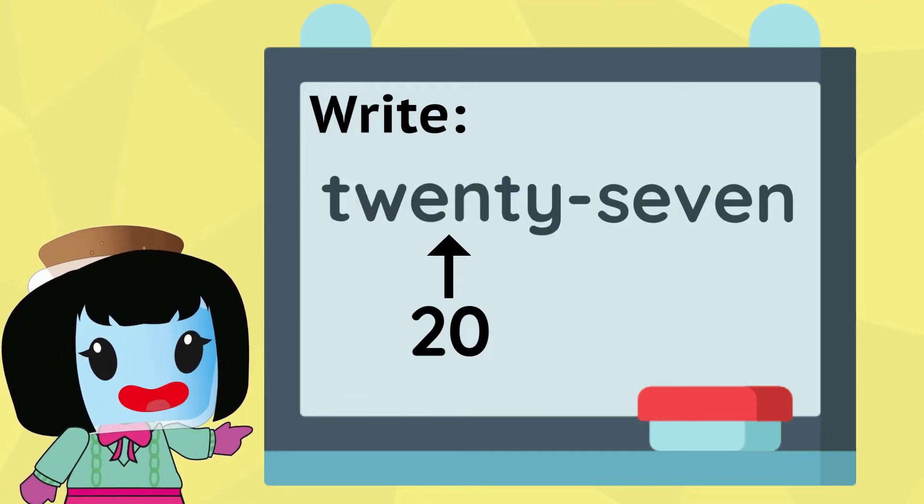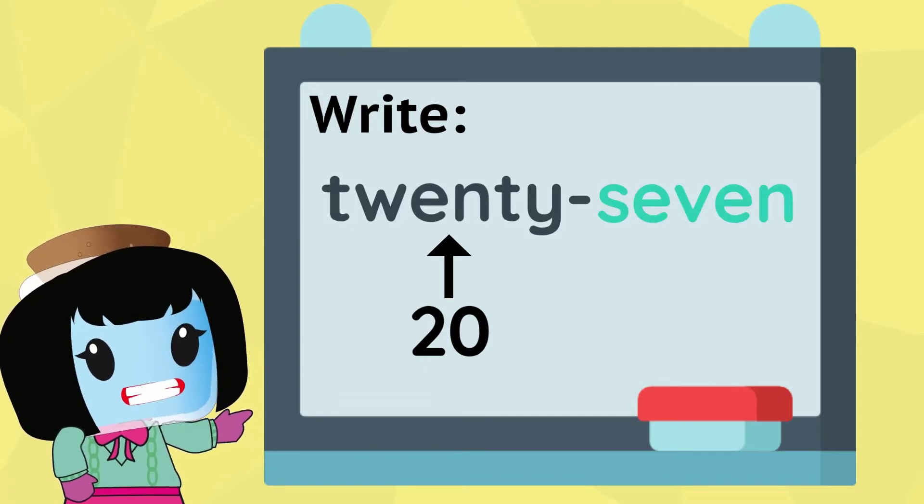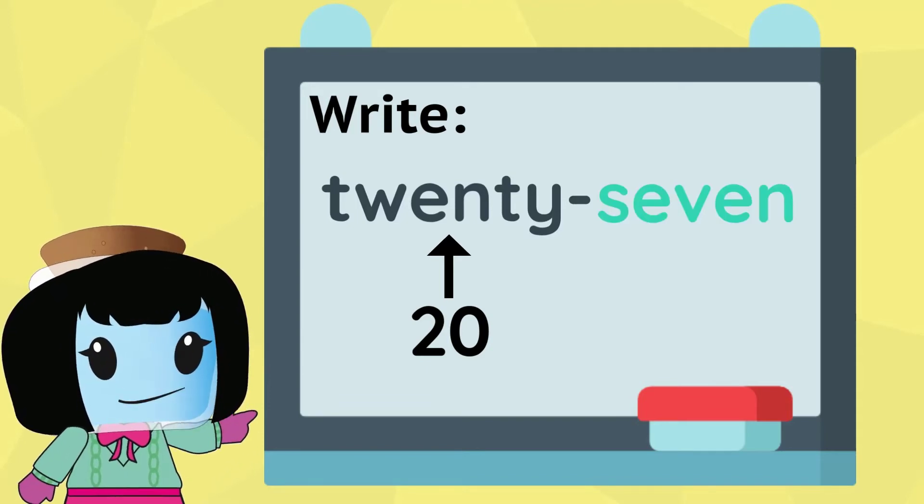The second part of the number is seven. To write it as a number, we would write seven.